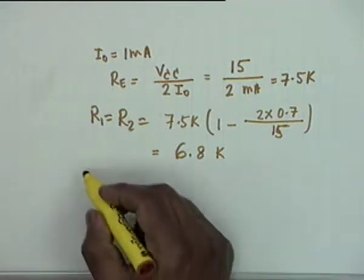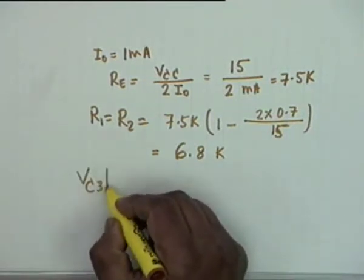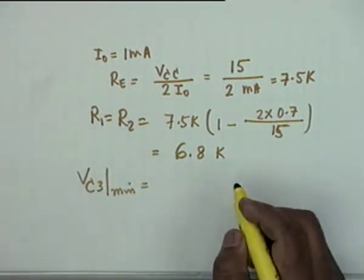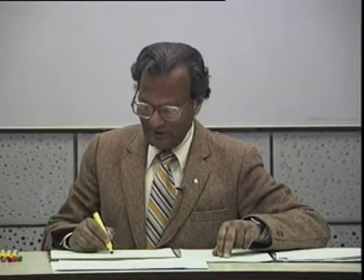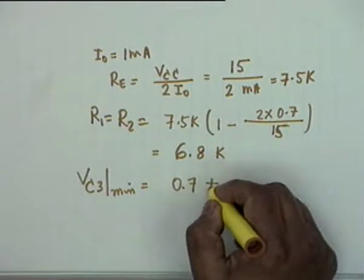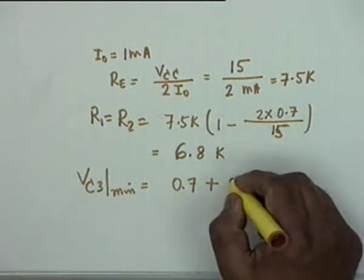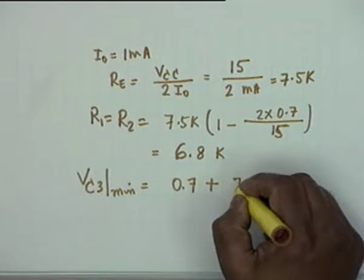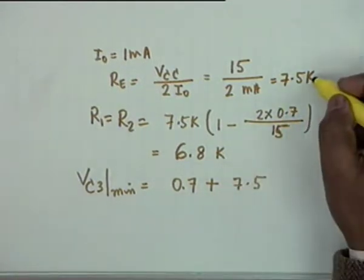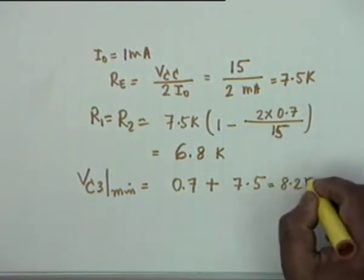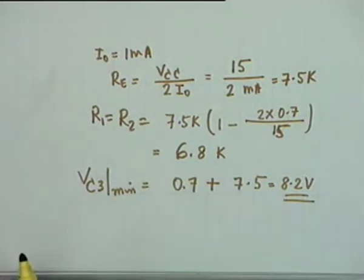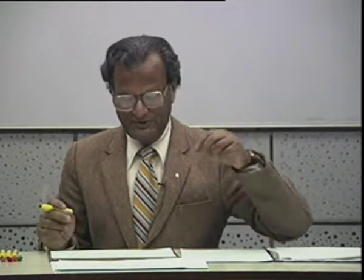Finally, the minimum VC3: VCE3 must be at least VBE3. The minimum VC3 equals VBE plus I0·RE, which is 0.7 plus 1 mA × 7.5 kΩ equals 8.2 volts. This is the minimum voltage required between the collector of Q3 and ground. If it falls below this, Q3 will go into saturation.